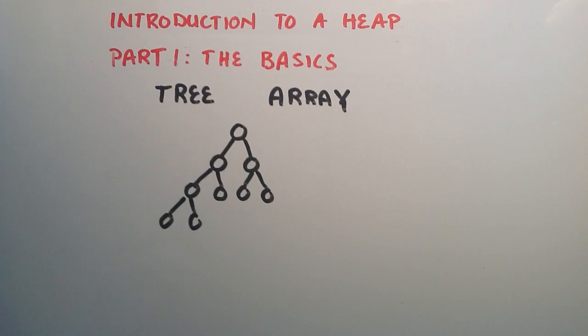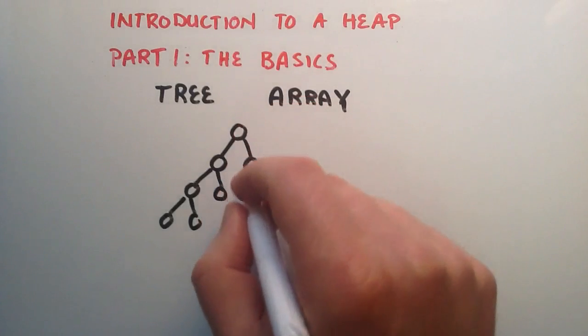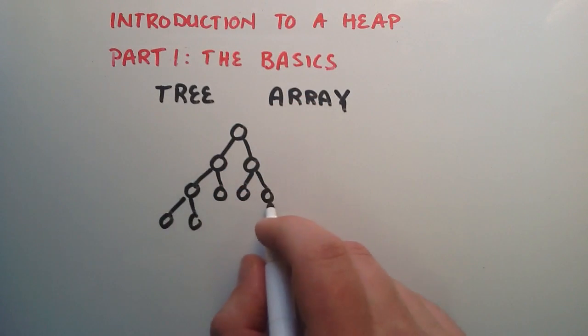So that's the structure of a heap. You fill it in from top to bottom, left to right, and you don't move on to the row below until the row above is completely full.